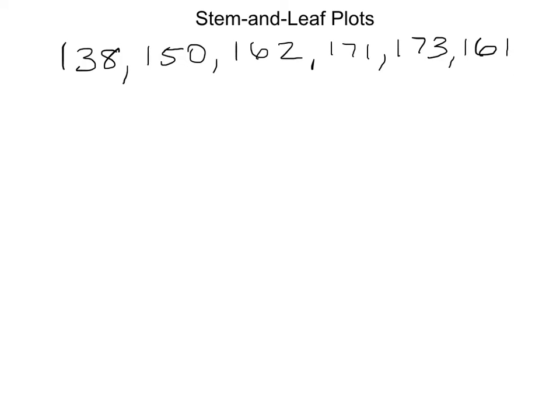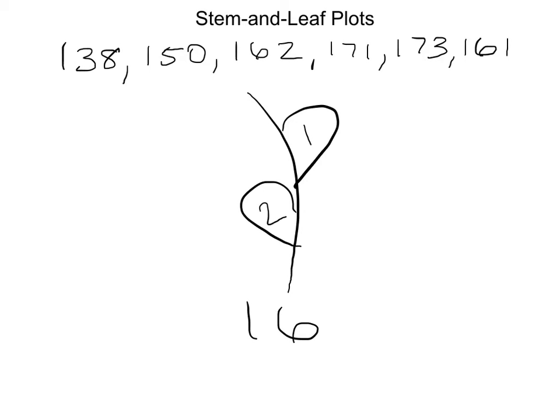We can think of this like we would think of a plant or a flower. A stem, for example — 16 would represent 160 in this case. One stem can have multiple leaves. For example, one leaf can have a 1 and one leaf can have a 2, representing the 1 leaf and the 2 leaf. So this stem and leaf represents 161, and this stem and leaf would represent 162.